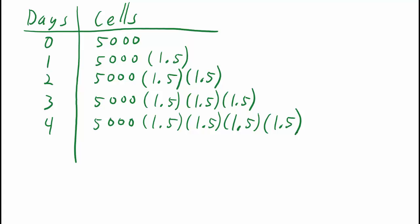Well, let's see, we're interested in how many cells there are after 35 days. There must be a better way to do this, and there is. We can use exponents to represent repeated multiplication.